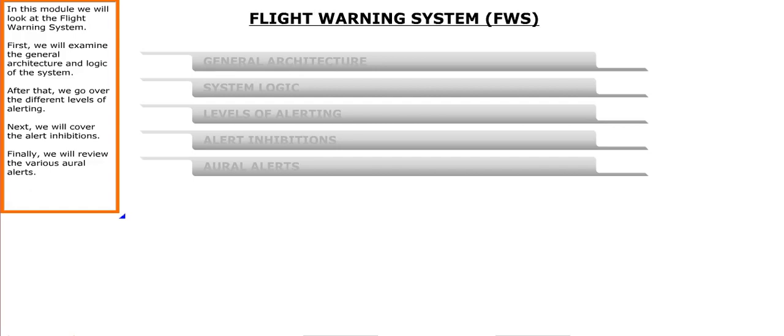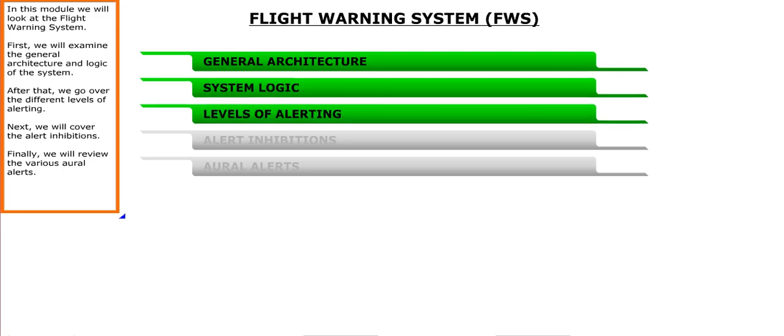In this module, we will look at the flight warning system. First, we will examine the general architecture and logic of the system. After that, we go over the different levels of alerting. Next, we will cover the alert inhibitions. Finally, we will review the various oral alerts.